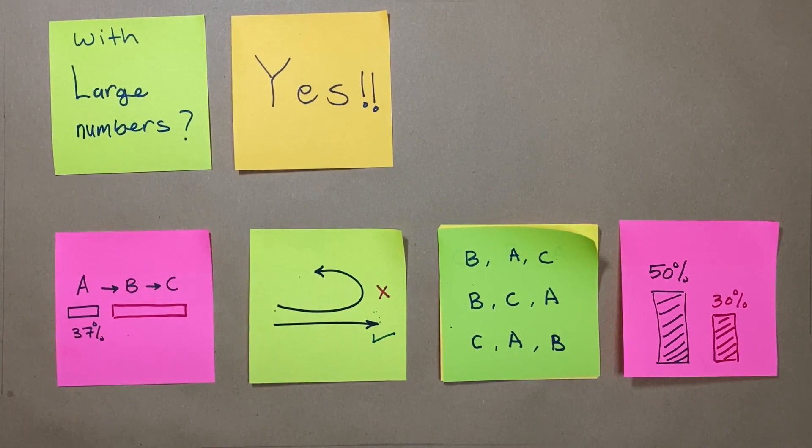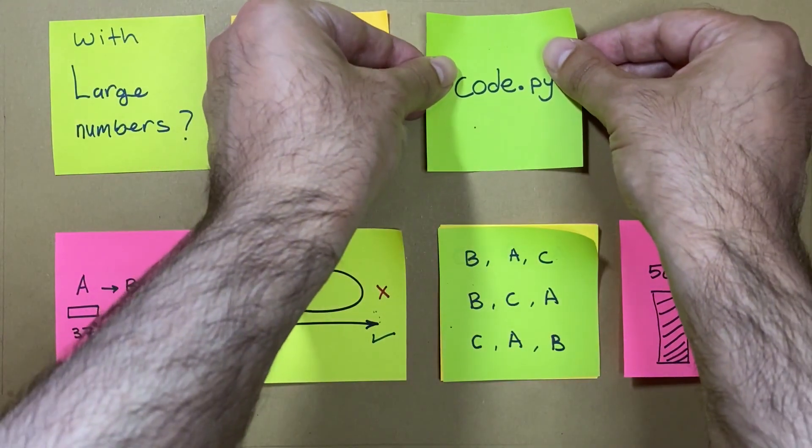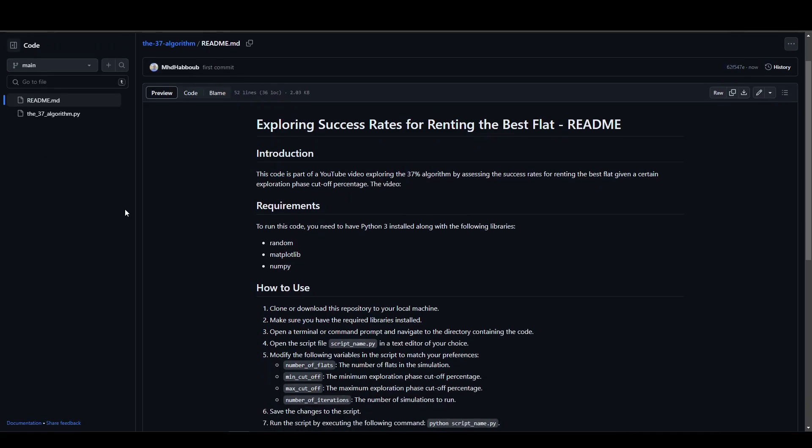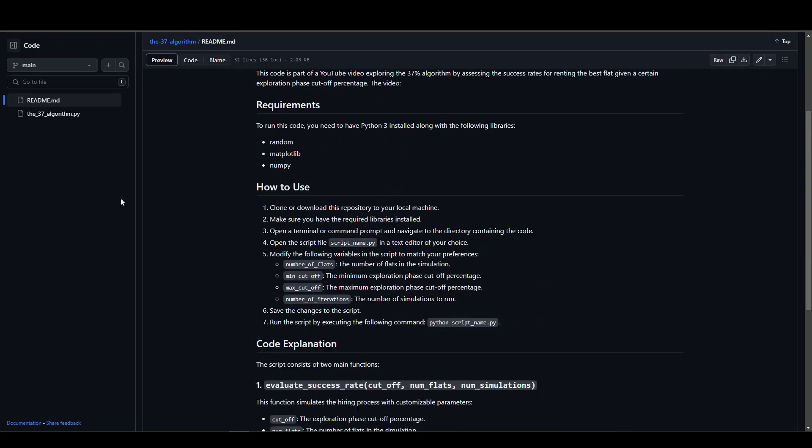Now you might be wondering whether this algorithm will work for large numbers of options as well. The good news is yes. The even better news is that I made a small Python script to simulate that for you. You can check it up in the GitHub repo in the description below.